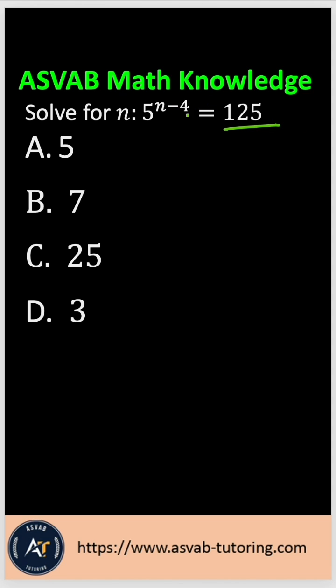So in order to solve this type of problem, what do you have to do? You have to know a formula. The formula is if a to the power x equals a to the power n, then you could write x equals n, where a is called the base and x and n are called the exponent.